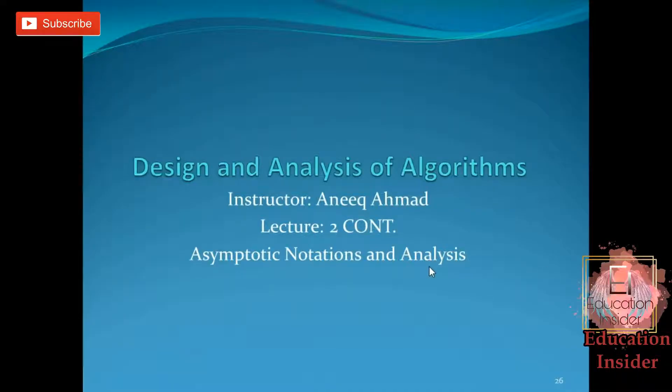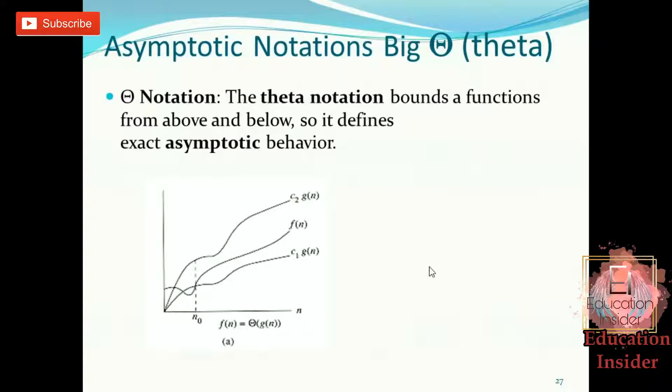So now let's start with big theta notation. Just as big O gives the upper bound and big Omega gives the lower bound, this theta notation gives both. That is, it defines both lower bound as well as upper bound of a function f(n). As you can see in this graph, this f(n) is bounded by this upper bound and this lower bound.